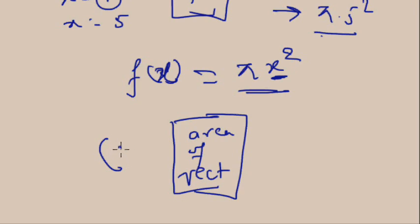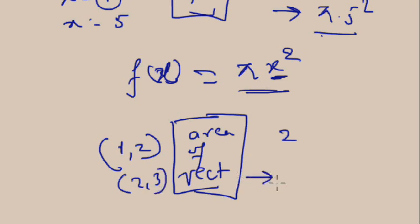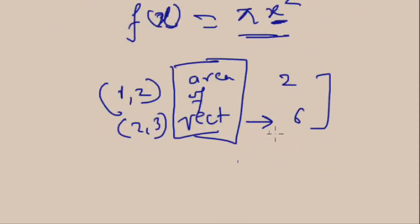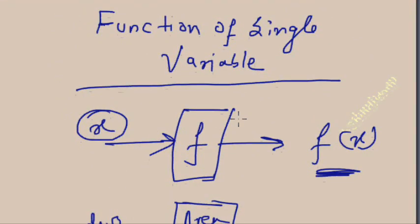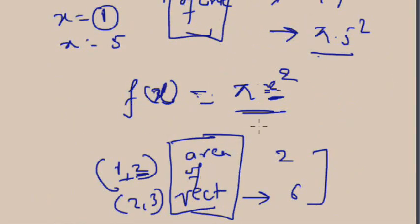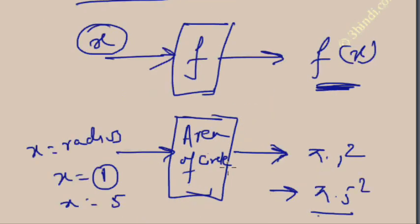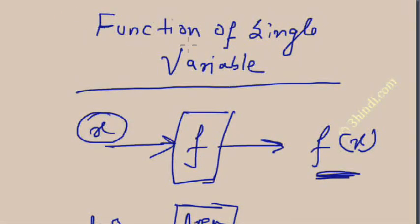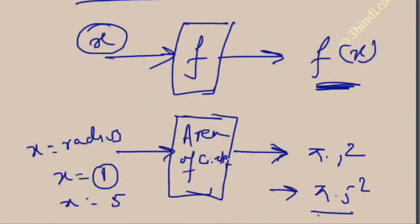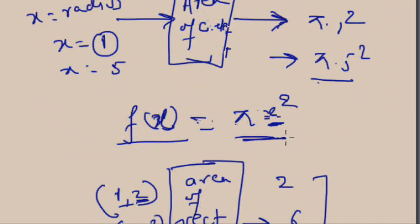Now consider the area of a rectangle. Here you require two variables. If the input is (1, 2), the area is 2. If the input is (2, 3), the output is 6. So in this case the output is dependent upon two variables — this is called a function of two variables. But I will discuss only the function of single variables.